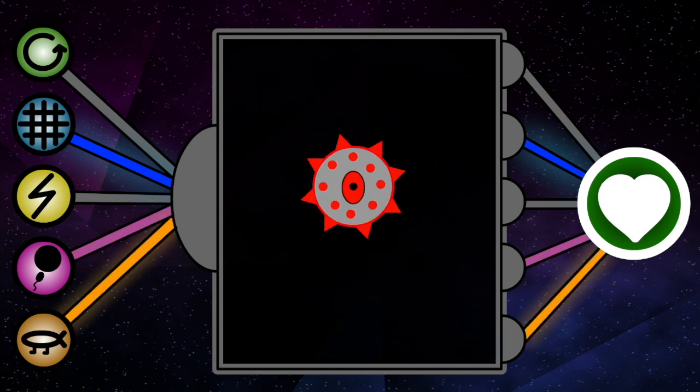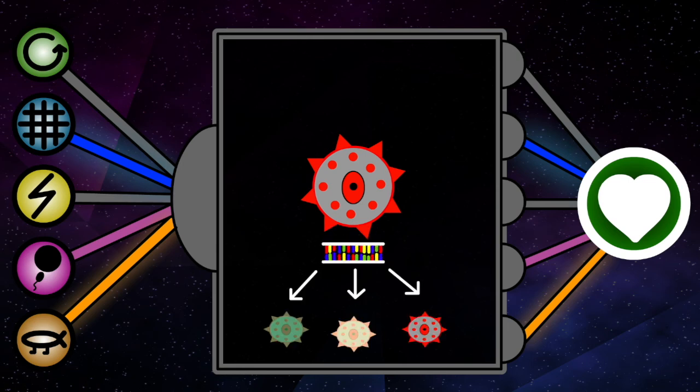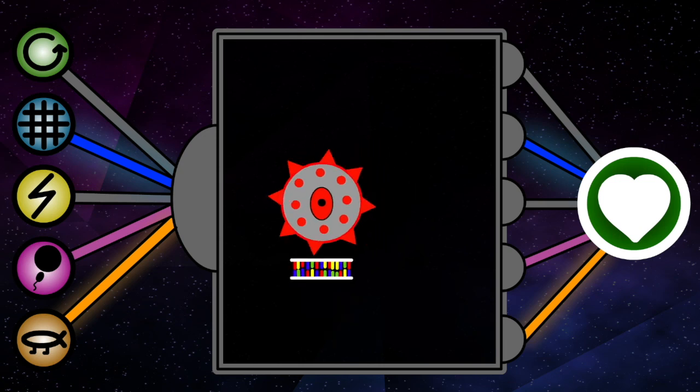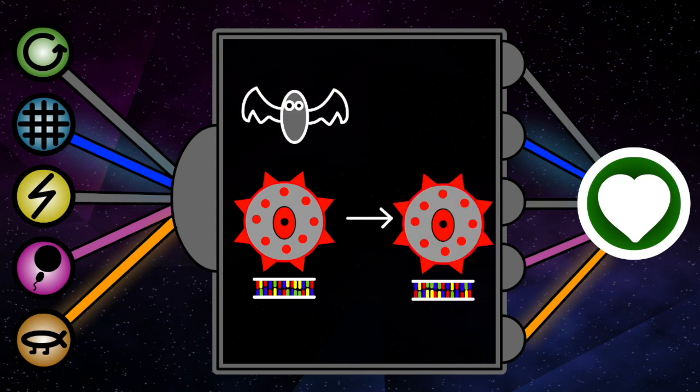Okay. Do viruses evolve? Yes. A virus reproductive cycle does pass down genetic material, which is the key for evolution, and it means it can evolve. In fact, viruses evolve very quickly. If we take COVID-19, for example, its original host was bats, but it evolved to be able to use humans as a host as well.